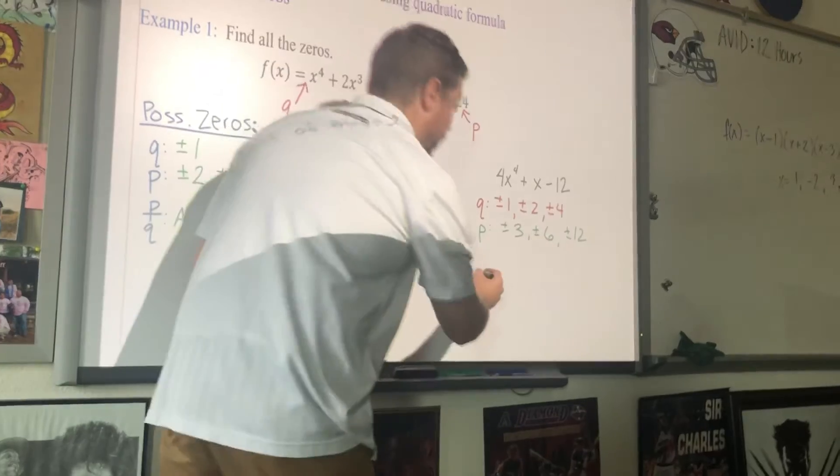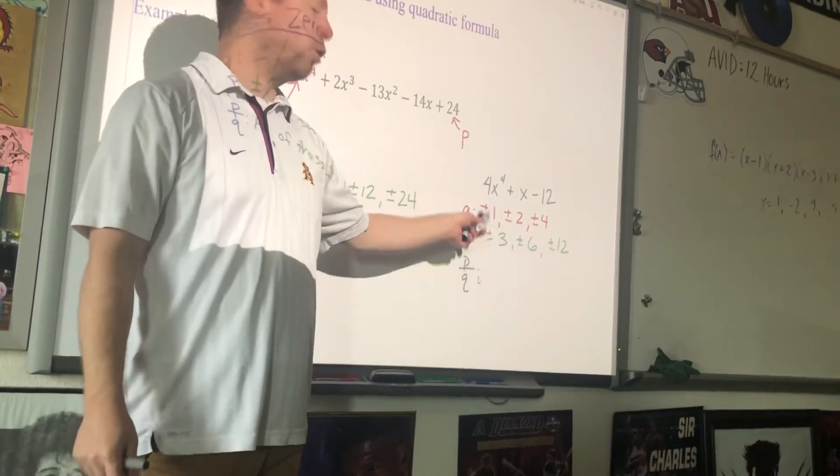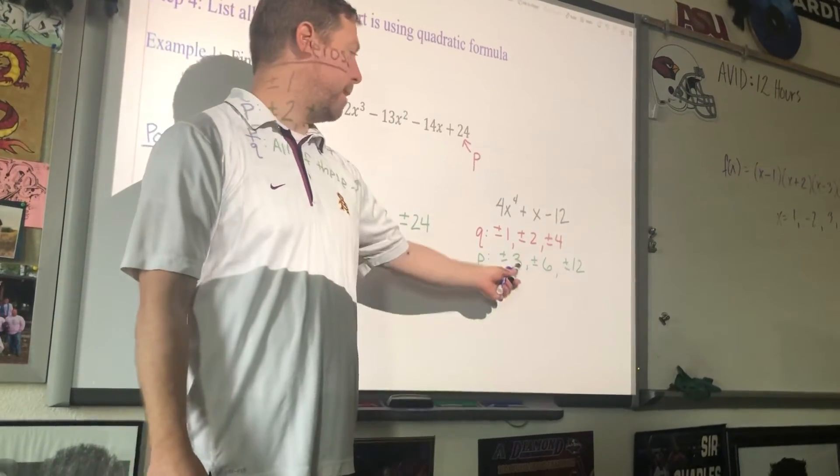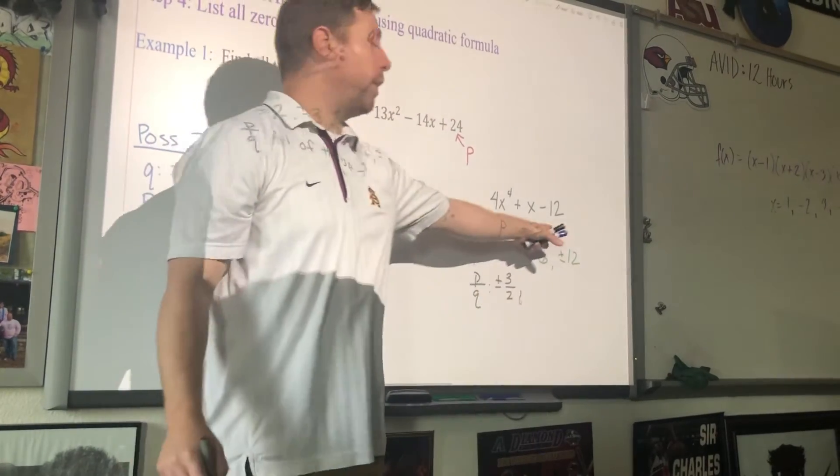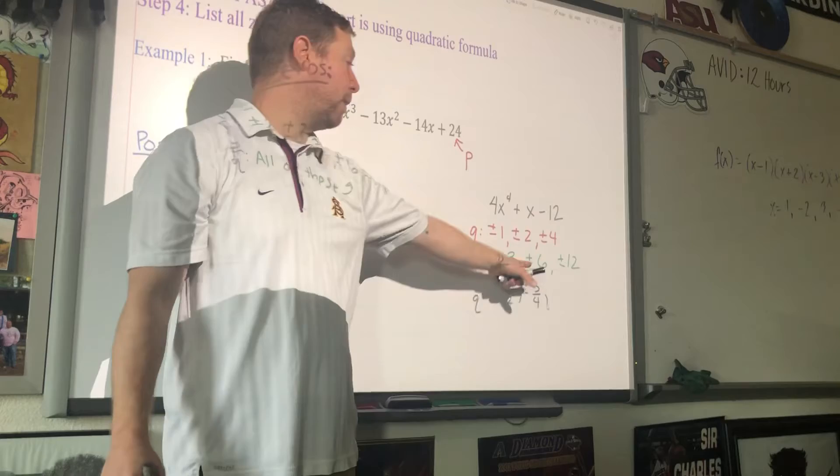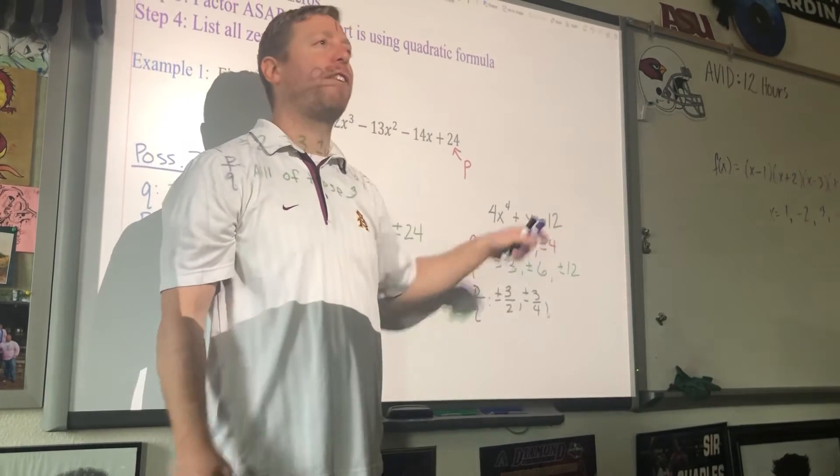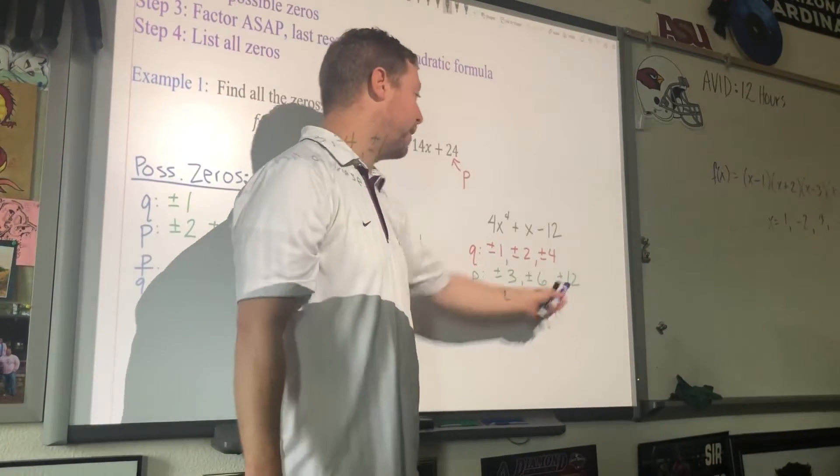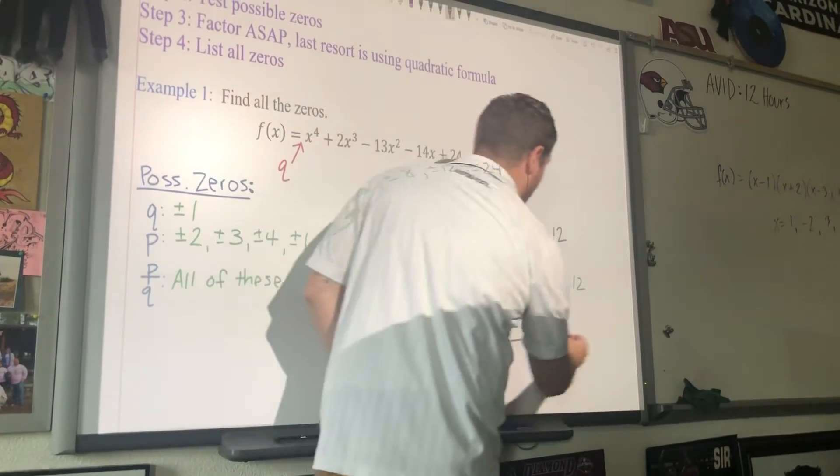Now when we do P over Q, this gets crazy. Watch very carefully. Take your first P. And ignore the pluses or minuses because you're just going to write pluses or minuses in front of everything anyway. 3 over 1. We've got to put it over each one. 3 over 1. That's 3. Do we already have it? Yep. Next one. 3 over 2. Do we have that one yet? Nope. So I've got to do plus or minus 3 over 2. 3 over 4. Do we have that one? Nope. We did all of our 3s. We did our 3s over all of these. Go to the next one. 6. 6 over 1. Do we already have it? Yep, that's 6. 6 over 2. Do we already have it? Yep, that's 3. 6 over 4 would reduce to be 3 over 2. Already got it. That one's good. 12. 12 over 1. We already got it. That's 12. 12 over 2 is 6. Already got it. 12 over 4 is 3. Already got it.